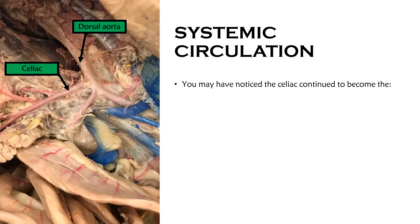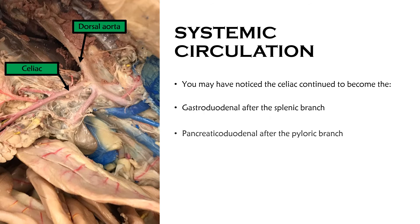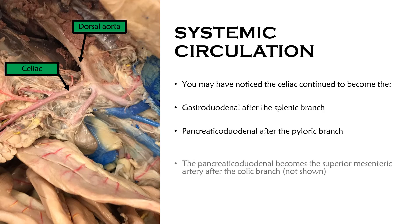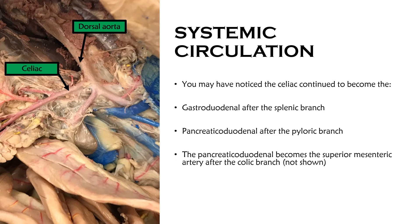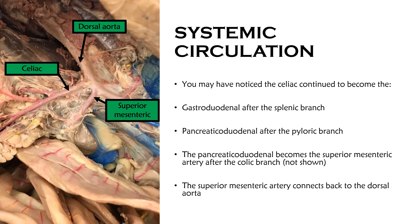You may have noticed the celiac continued to become several different arteries as branches came off. It became the gastroduodenal after the splenic branch, and then the pancreaticoduodenal after the pyloric branch. The pancreaticoduodenal subsequently becomes the superior mesenteric artery after the colic branch — not shown here — and that superior mesenteric artery connects back to the dorsal aorta as its second branch.